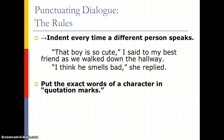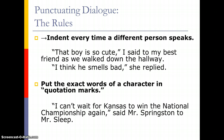The second rule is you need to put the exact words of a character in quotation marks. We want to make sure that we put only the exact words and nothing extra. For example: 'I can't wait for Kansas to win the national championship again,' said Mr. Springsteen to Mr. Sleep. Mr. Springsteen's exact words are the only lines that get quotation marks. The rest of the sentence is telling us who was speaking and who they were speaking to. So make sure that you're putting only the exact words of the character in quotation marks.